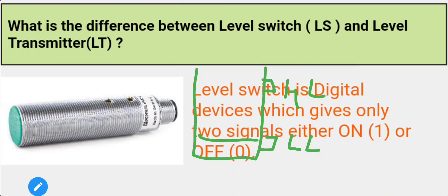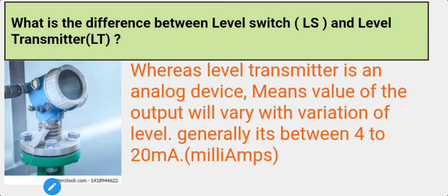Now let's see level transmitter. Level transmitter is an analog device which means it will give you a real-time value output in terms of 4 to 20 milliamps.